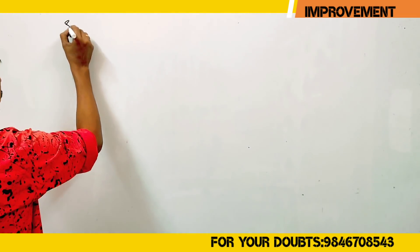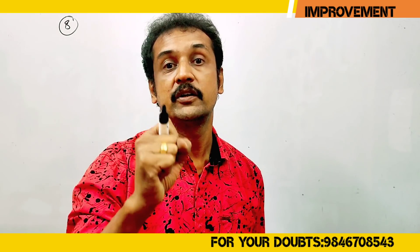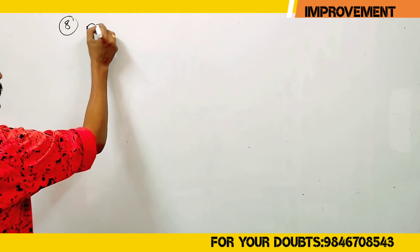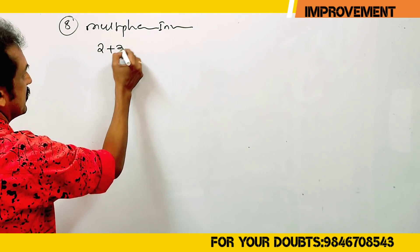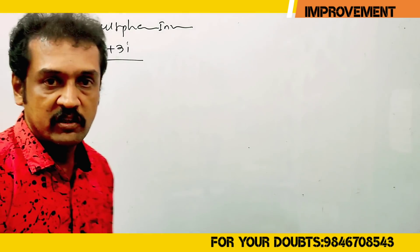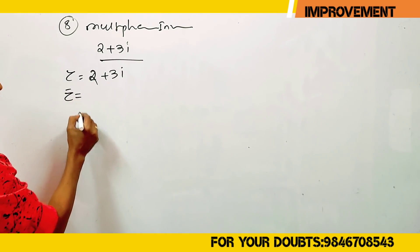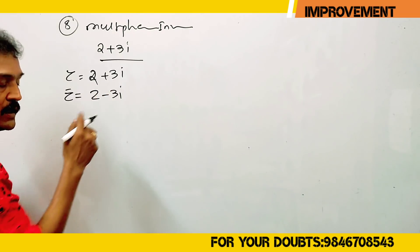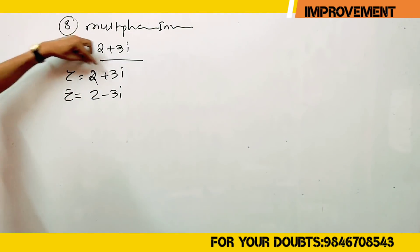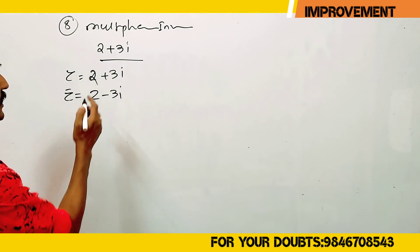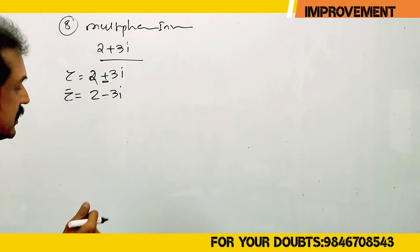The next question is complex numbers. We will find the multiplicative inverse of 2 plus 3i. Let z equal 2 plus 3i. Then z-bar equals 2 minus 3i — we get the conjugate by changing the sign of the imaginary part.